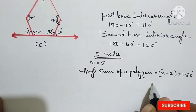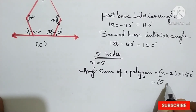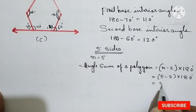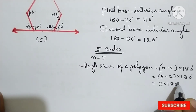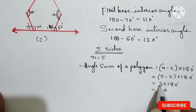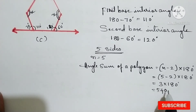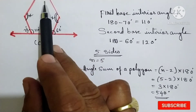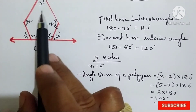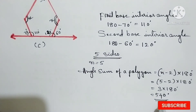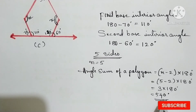So 5 minus 2 is equal to 3, into 180 degrees. Now multiply 3 into 180 degrees: 3 times 0 is 0, 3 times 8 is 24, carry 2, 3 times 1 is 3 plus carry 2 is 5 — so 540 degrees. That means the sum of all the angles of this figure is 540 degrees. A figure with 5 sides has a total internal angle sum of 540 degrees.